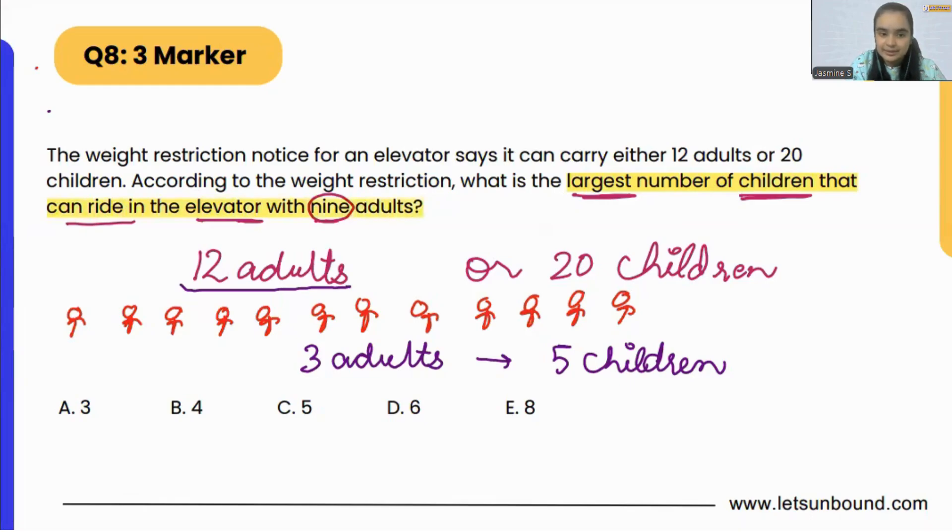With nine adults, that means if we start from here, so 1, 2, 3, 4, 5, 6, 7, 8, and 9. There is only nine adults in the elevator.